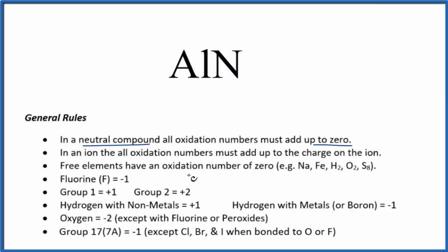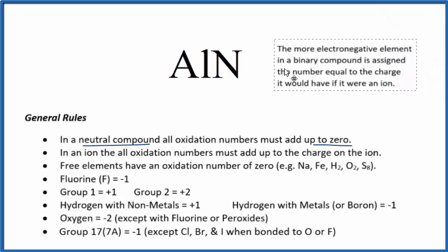We don't see aluminum or nitrogen here on our list. Aluminum will often be plus three, but we can look at this rule here that will help us. The most electronegative element in the binary compound will have the oxidation number that's equal to its charge if it were an ion.